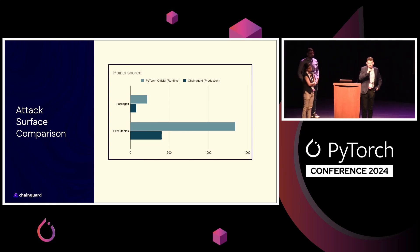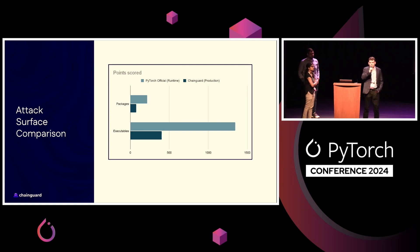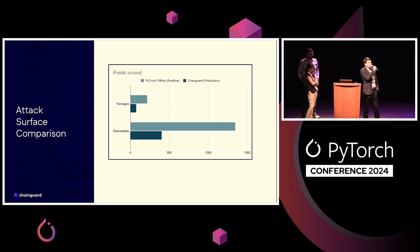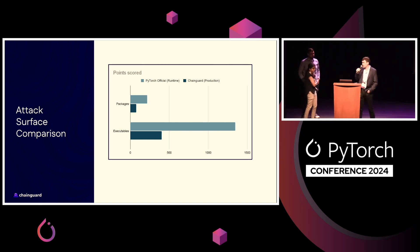Here is a comparison of the attack surface of the current PyTorch image versus the recently built ChainGuard PyTorch image — specifically the runtime variant. The ChainGuard PyTorch image has about 75 packages, versus about 200 in the current PyTorch image. We also have about 400 executables versus 1,400 in the current PyTorch image.